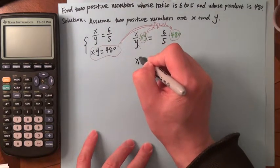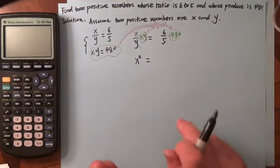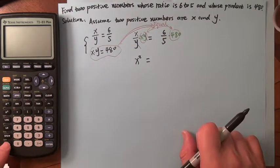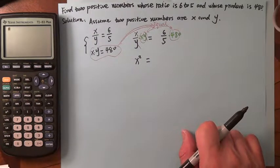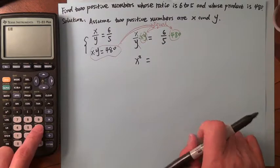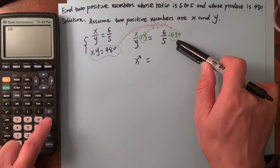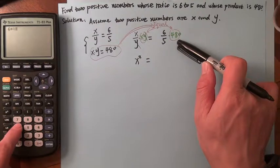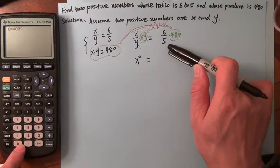The right-hand side is, turn on your calculator, 6 times 480 divided by 5, which equals 576.